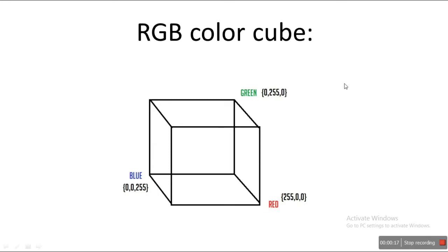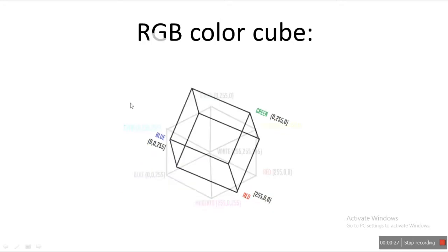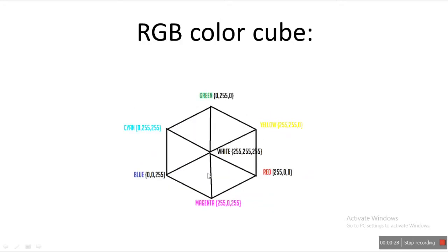So if you know what the RGB color model is, this is our RGB color cube. We have got red, green, and blue over here. And if we look at this cube from this angle, then it will look like a hexagon, like this. Now how did we get yellow, magenta, cyan, and all these colors?